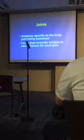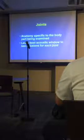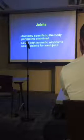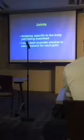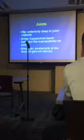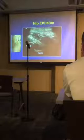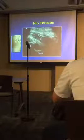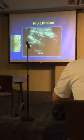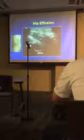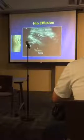Moving from tendons to joints: the anatomy is specific to each body part, and you learn the best window to see effusions for each joint. For the hip, we place the probe longitudinally to see the femoral head and femoral neck. Effusions gather at the head-neck junction, where the capsule is most loosely applied. Here is an effusion at the head-neck junction.